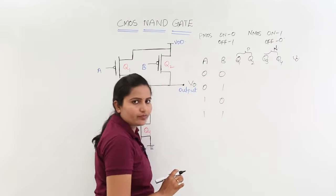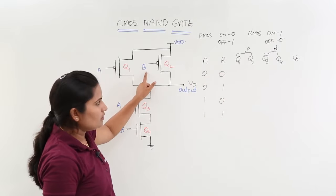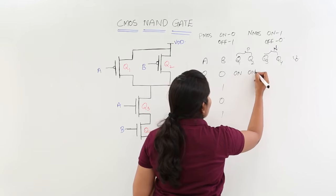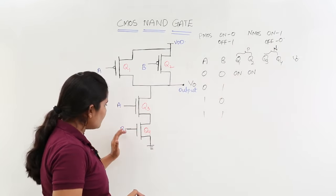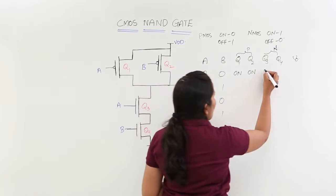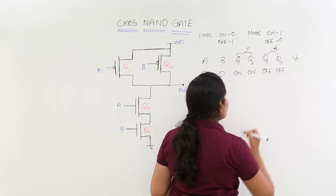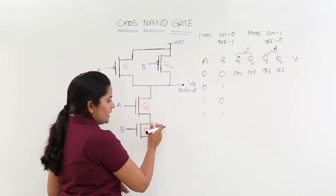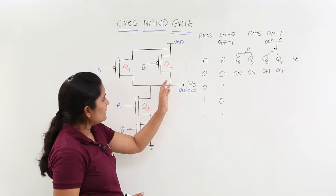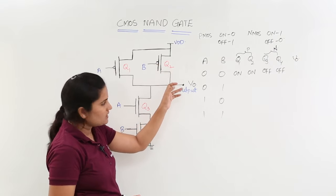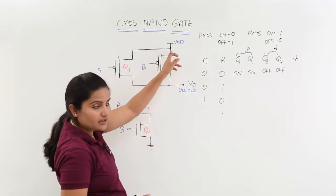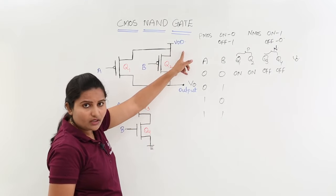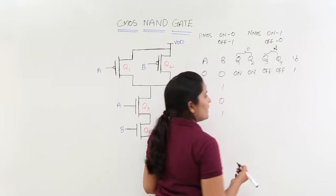Whenever A equal to 0, B equal to 0, both PMAS are going to ON — that means Q1 ON, Q2 ON. Same low voltage if given to NMAS, those are going to OFF. Any MOSFET that is OFF means it will be open-circuited. These two NMAS transistors are OFF meaning open circuit path, and these two PMAS are ON meaning short path. Your output is cut from ground and connected to source voltage, so you are getting 1 at output.